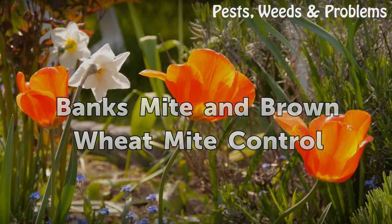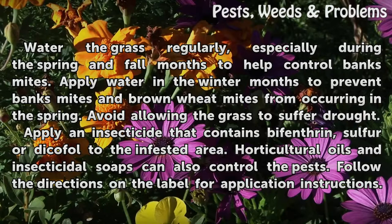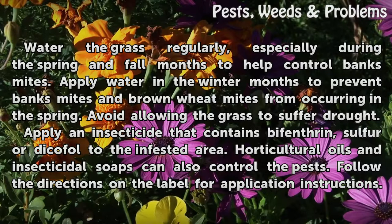Banks mite and brown wheat mite control. Water the grass regularly, especially during the spring and fall months, to help control Banks mites. Apply water in the winter months to prevent Banks mites and brown wheat mites from occurring in the spring. Avoid allowing the grass to suffer drought.